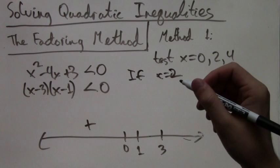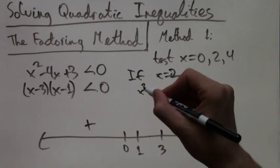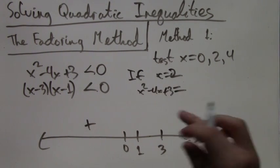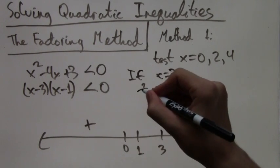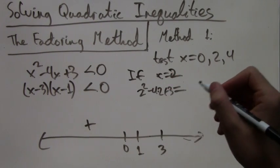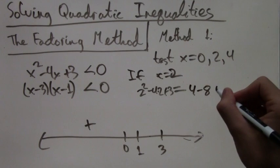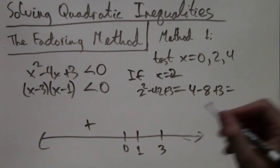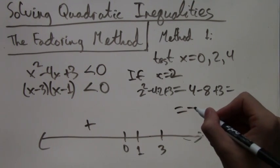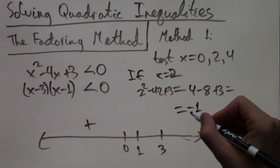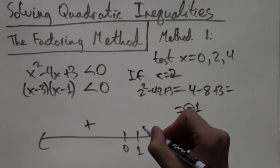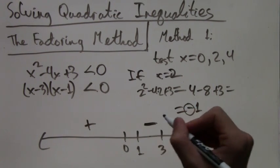2 is between 1 and 3. If we plug in 2 to x squared minus 4x plus 3, we will get 2 squared minus 4 times 2 plus 3, which is 4 minus 8 plus 3, which simplifies to negative 1. This is negative, so we put a negative sign. The interval between the roots will be negative.